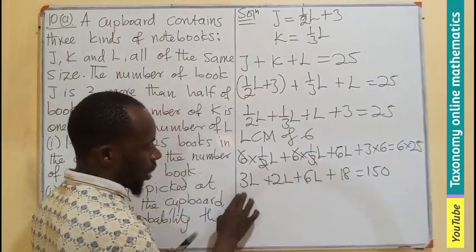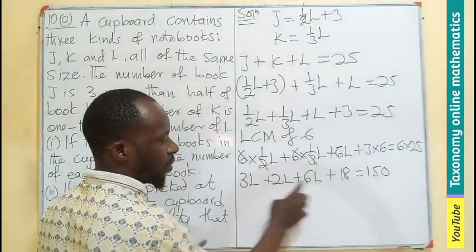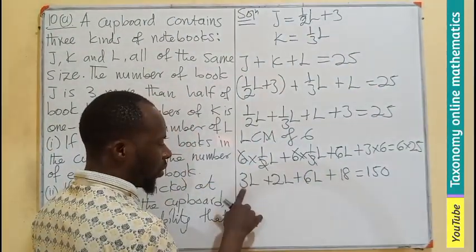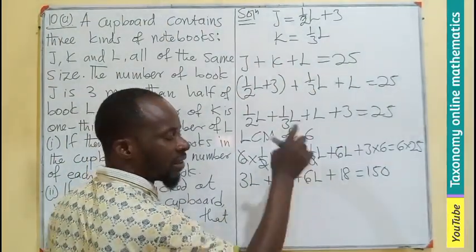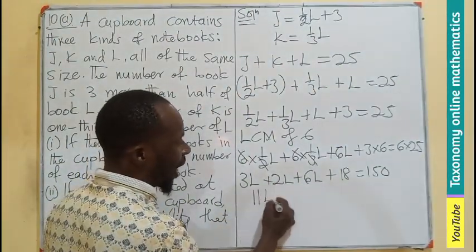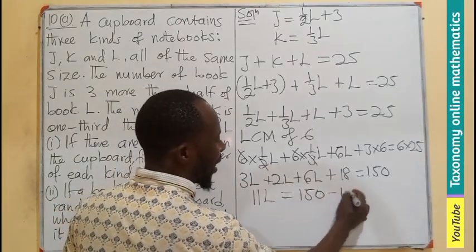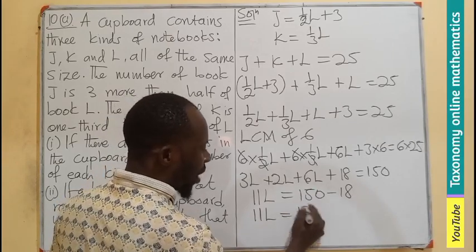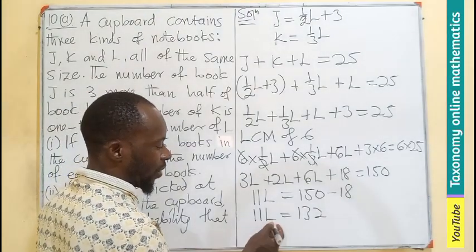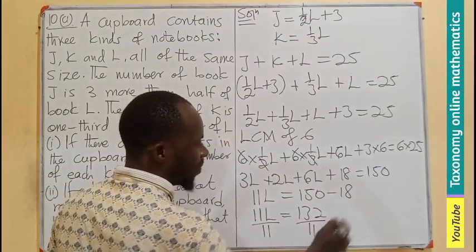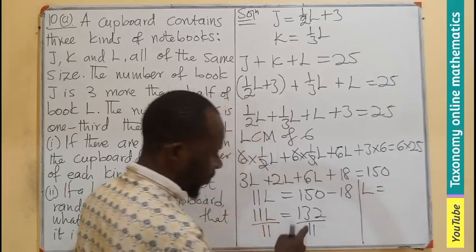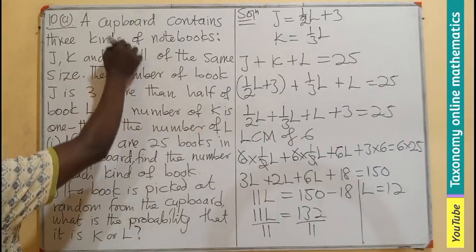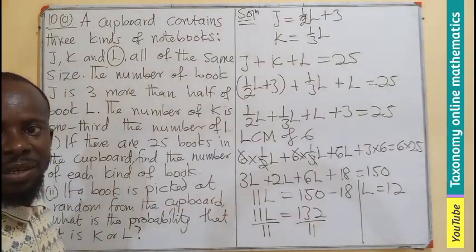Collecting the L terms: 3L plus 2L plus 6L equals 11L. Transposing 18: 11L equals 150 minus 18, which gives 11L equals 132. Dividing both sides by 11, we get L equals 12. So there are 12 books of type L.